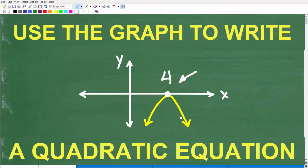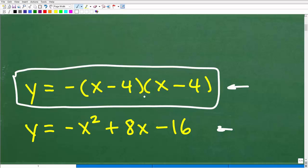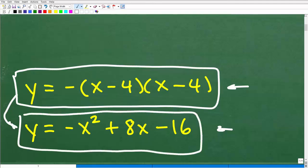There's not any one answer here, but the easiest answer to get in this particular scenario would be y equals negative x minus 4 times x minus 4. And if you expanded this, you would get this equation here: y equals negative x squared plus 8x minus 16. I, as a math teacher, would accept both of these as correct.